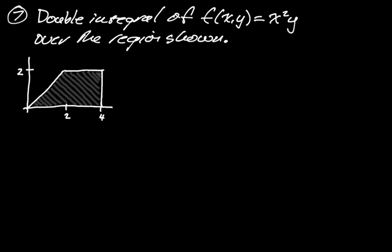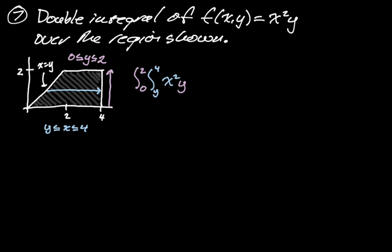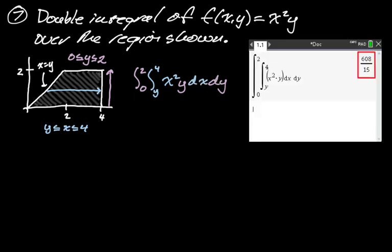Let's set that up. Y goes from 0 to 2. We know that y = x means x = y, and we want to go from left to right, so x goes from y to 4. We set up the integral: 0 to 2 for y, y to 4 for x, integrand x²y, dx dy — because x depends on y it has to go first. Calculator gives 608 over 15.